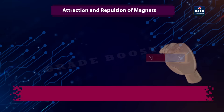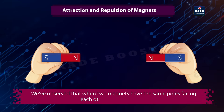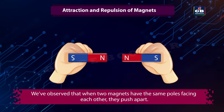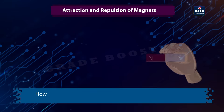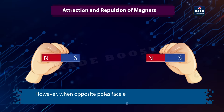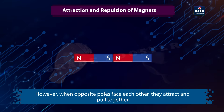We have observed that when two magnets have the same poles facing each other, they push apart. However, when opposite poles face each other, they attract and pull together.